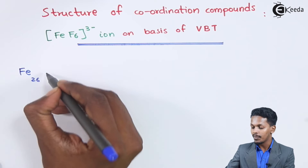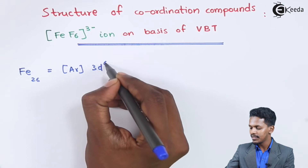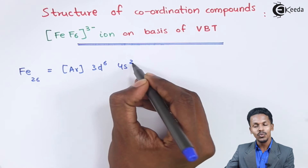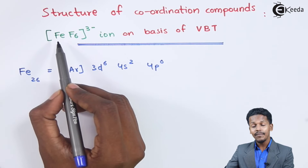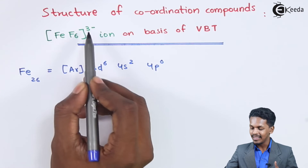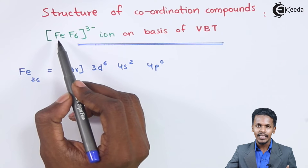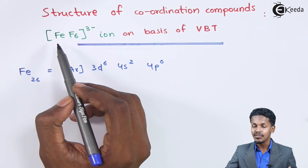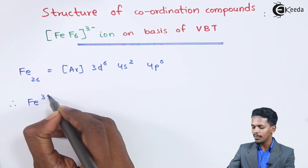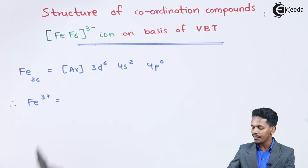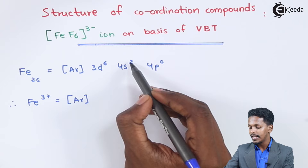Iron has an electronic configuration that can be written as [Ar] 3d⁶ 4s² 4p⁰. Now, if we calculate the oxidation number of iron in this complex, we find that the oxidation number of Fe is +3. So we need to write the electronic configuration of Fe³⁺.